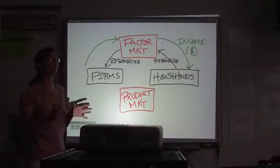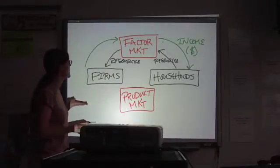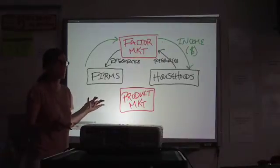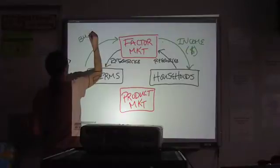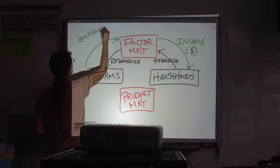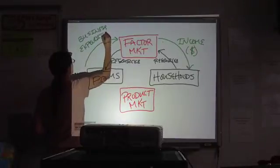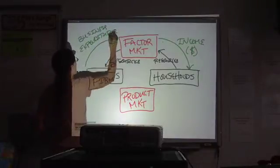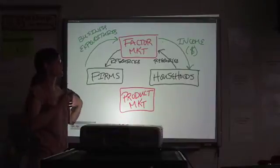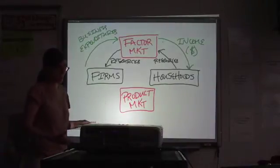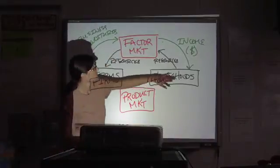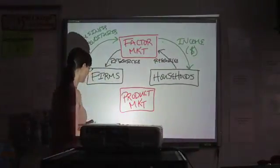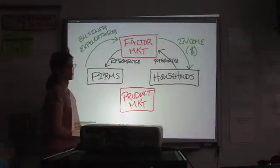Now, there are a couple of different terms we could use for this. We can call them just resource payments. We can call them, if we want to get a little bit wordier, business expenditures. An expenditure just means an item that you're spending money on. That's all that means. So they're spending money, they get resources. The household is providing the resources and getting paid. That's the first part of this.